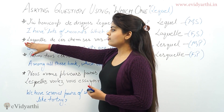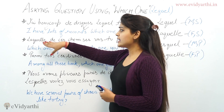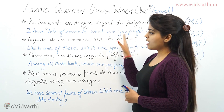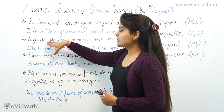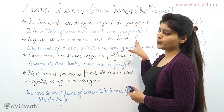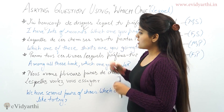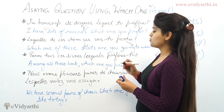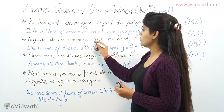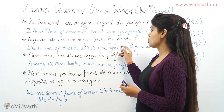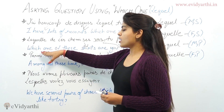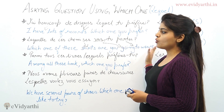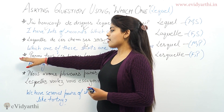Next example: 'Laquelle de ces chemises vas-tu porter?' — which means 'Which one of these shirts are you going to wear?' Here, 'chemise' means shirt, 'porter' means to wear, and 'aller' means to go.